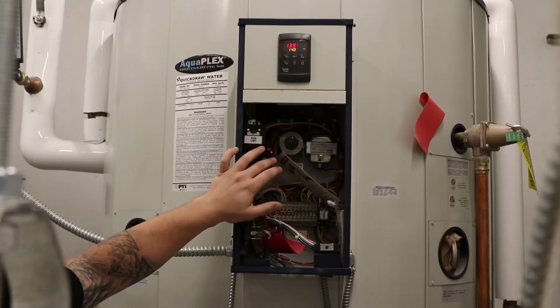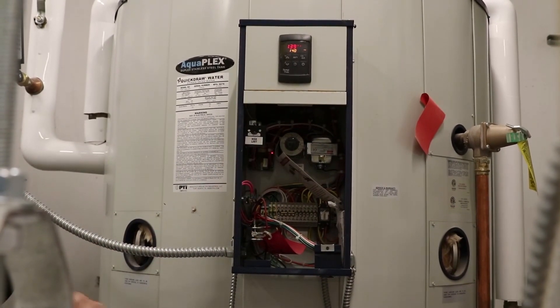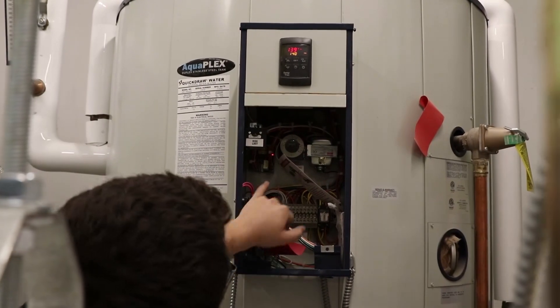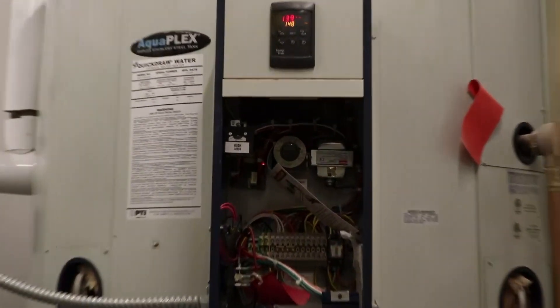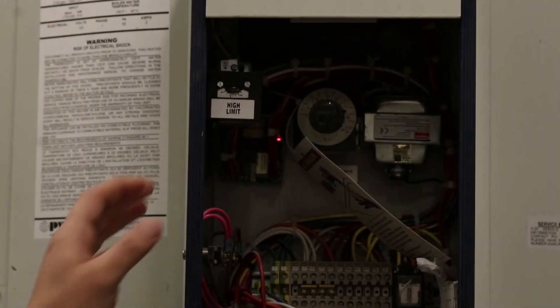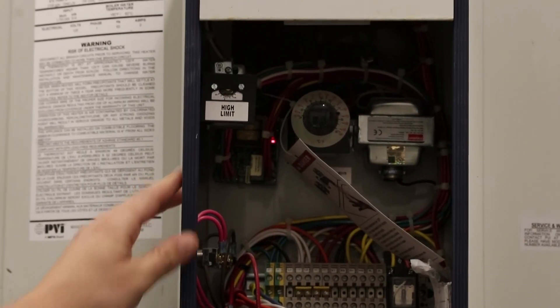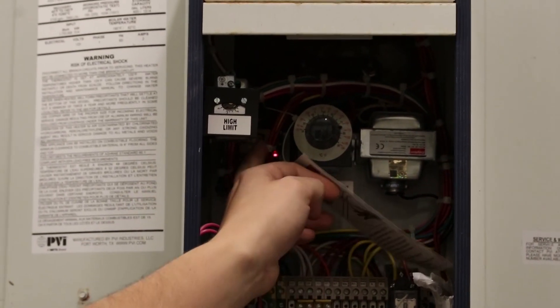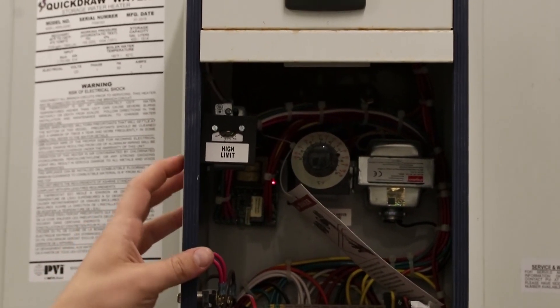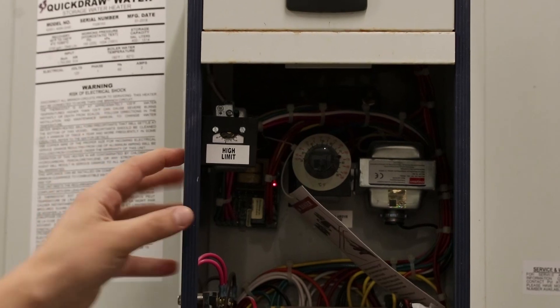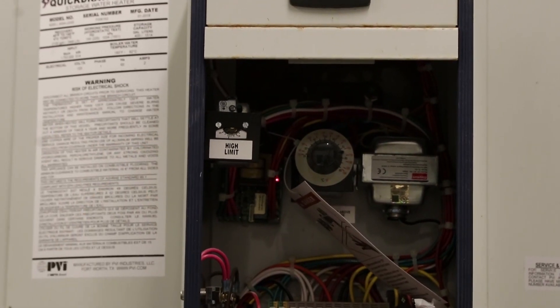The other safety, in addition to the manual reset high limit, is the low water cutoff control. You'll see that green circuit board that's in the control panel just behind the high limit. Hopefully on the camera, you can see there's a red LED light on on that board. That red LED light being present tells me that this control is sensing water and is satisfied and is not preventing operation of the water heater.